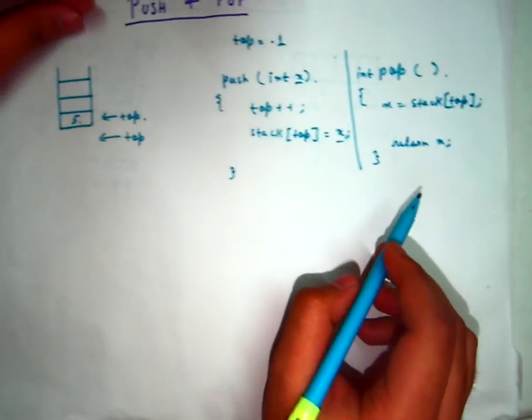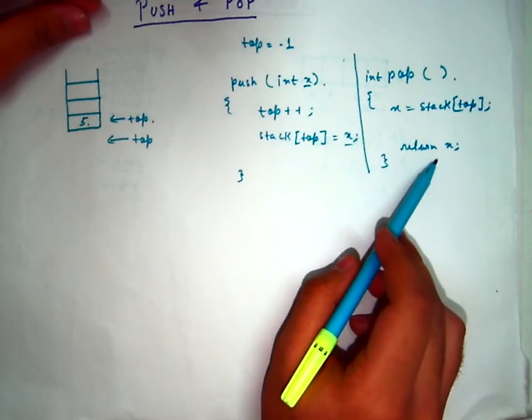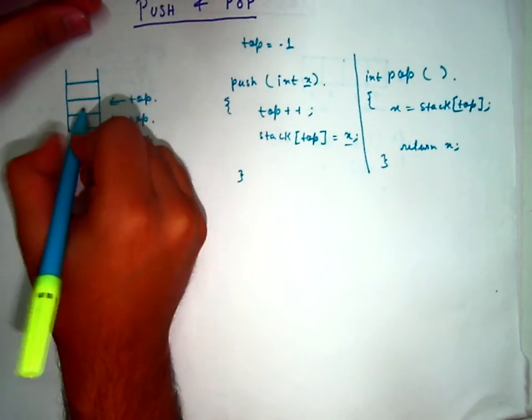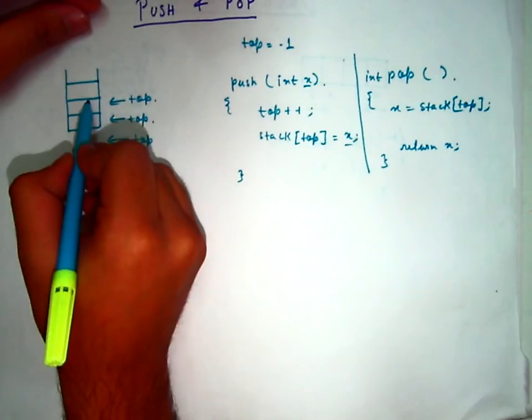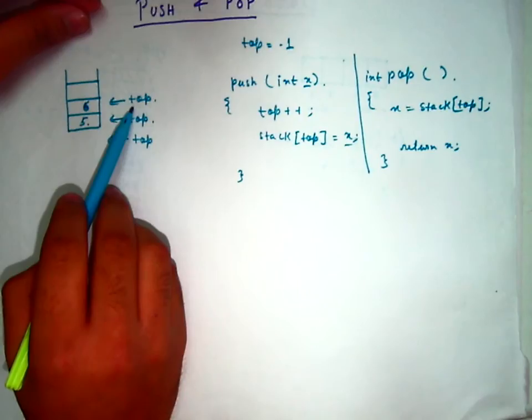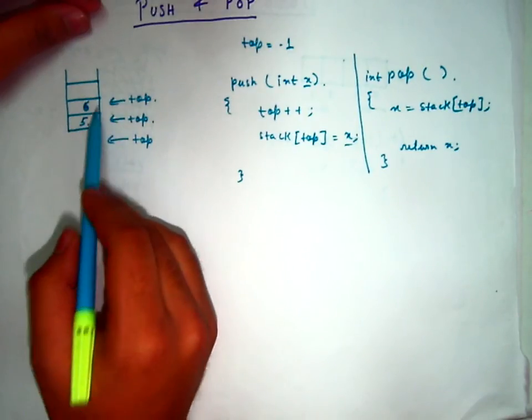Now see that before returning that value we have to update the position of the top. Suppose there was another element in here. Now if you remove this item from the stack you have to update the position of the top. That will ensure that when you perform pop again it will pop out this value.